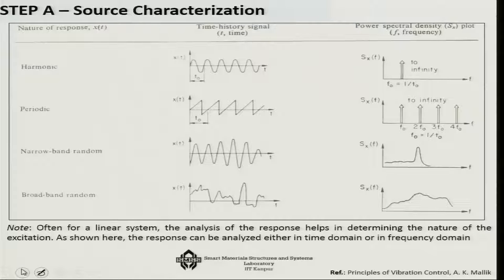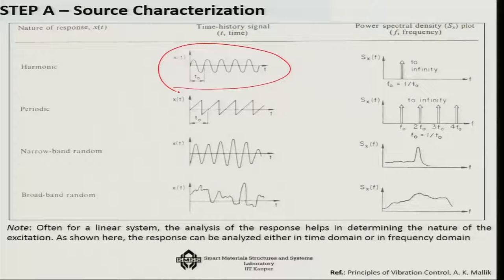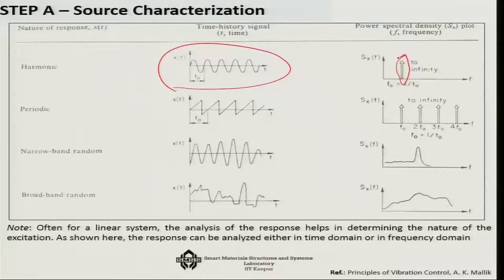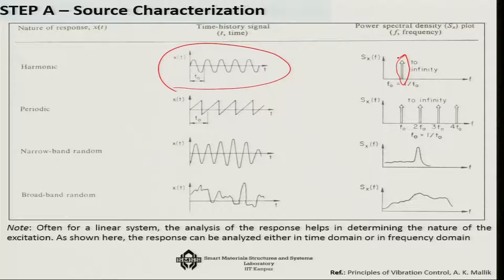If we take a pure single frequency harmonic excitation in the time history signal and carry out a fast Fourier transform, we will get only one peak. That would mean the signal contains only one natural frequency of the system, which is most probably the resonating frequency. We will be very lucky, because we have to design the system modification only around that particular frequency.